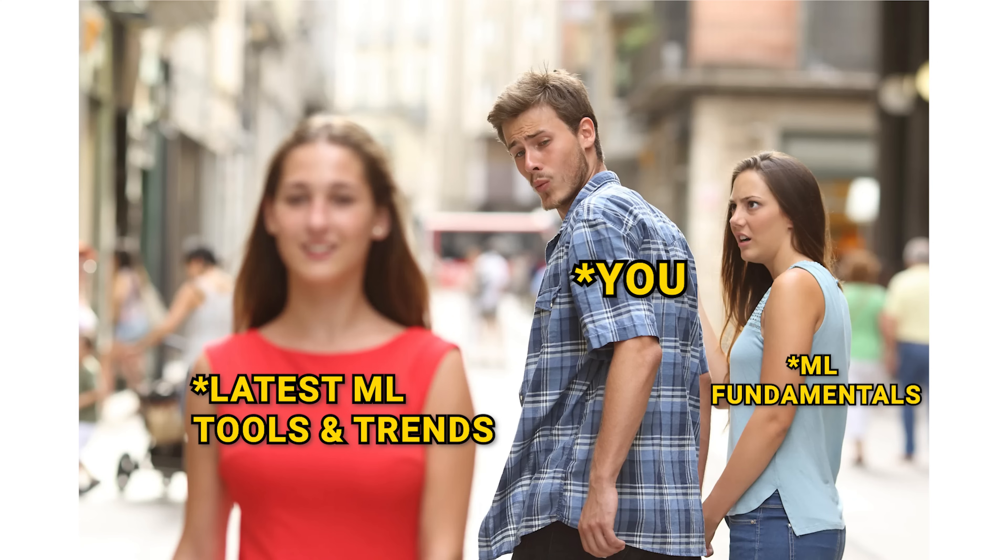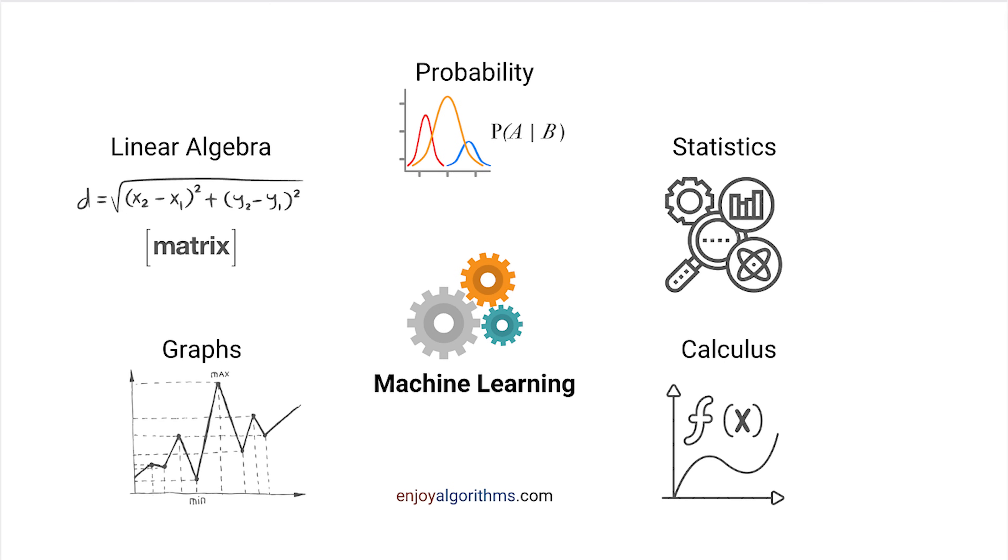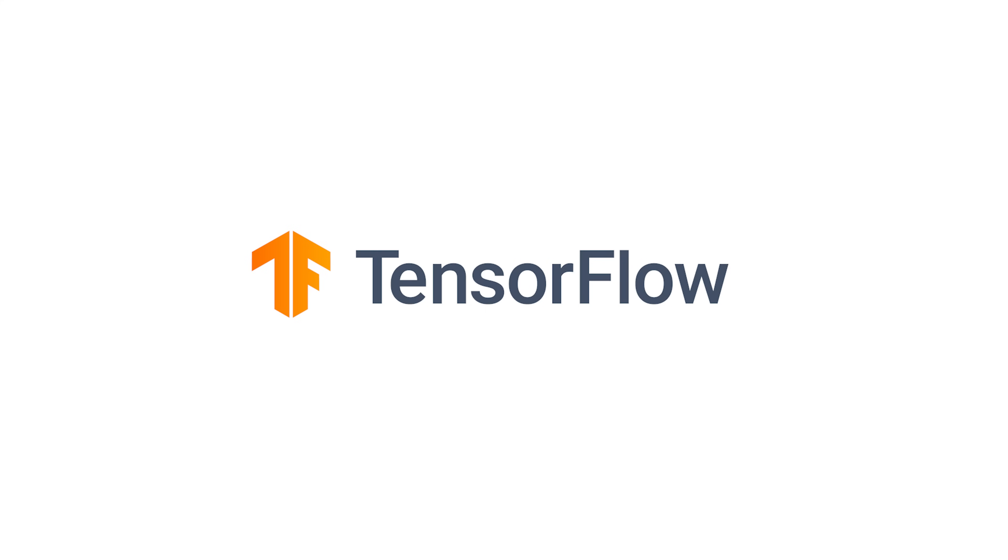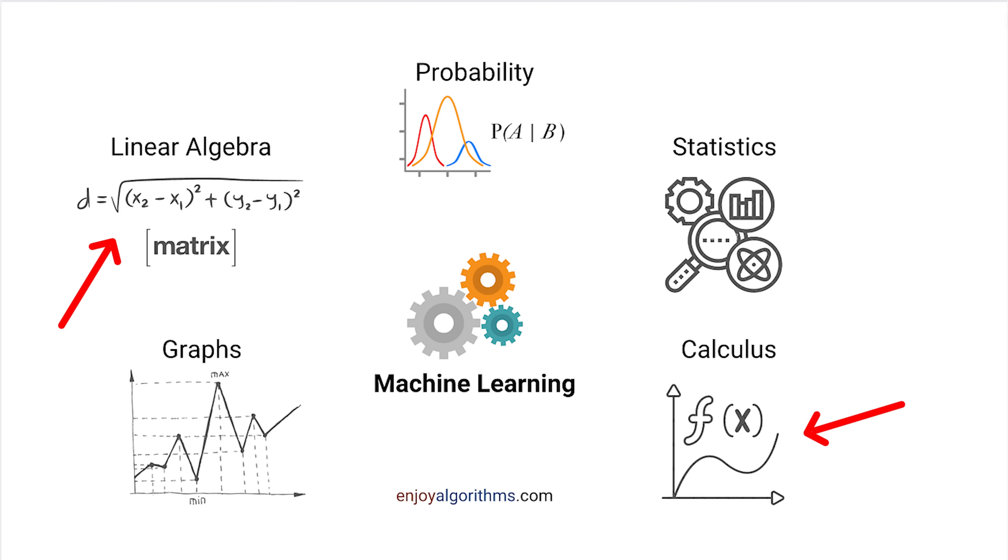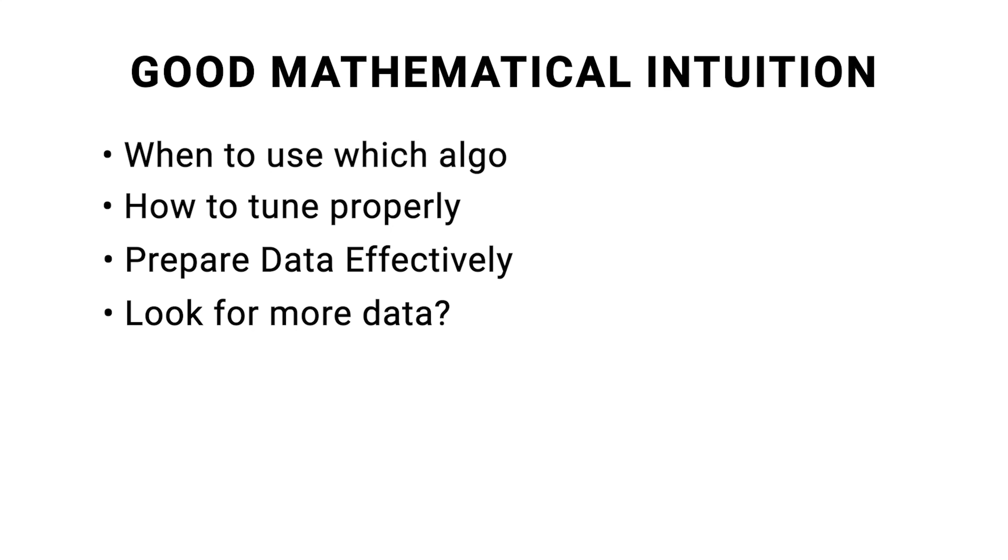Additionally, and maybe even more importantly, I believe it's important to get a good grasp of the math behind the magic. It's easy to get caught up in using high-level libraries like TensorFlow, PyTorch, and Scikit-learn, but understanding the mathematical foundations—linear algebra, calculus, and most importantly, statistics—will make you a far better machine learning practitioner. Getting a good mathematical intuition for how these algorithms work will give you a much better idea on when to use which algorithm, how to tune it properly, how to prepare your data effectively, and deciding when to look for more data, or when you need cleaner data, or when you need new features, and when you should tune more, and when you should use a simpler algorithm. Investing that time early on will save you a ton of time later on.